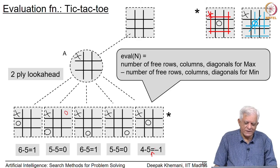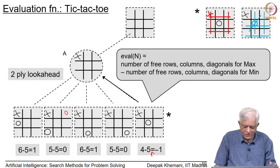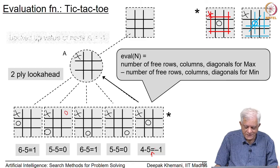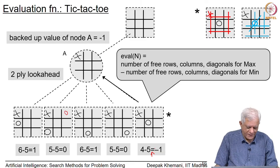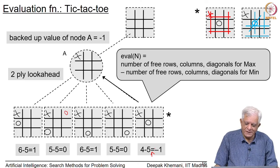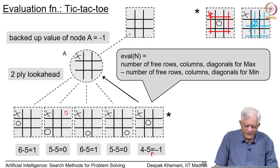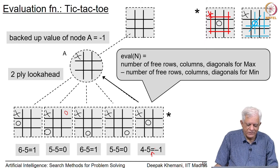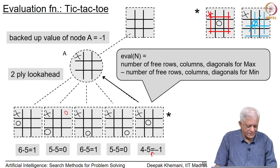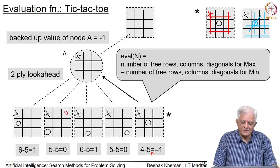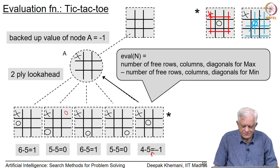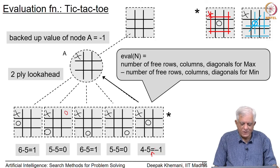We apply the evaluation function to each of the 5 board positions on the horizon. Using the minimax backup rule, since node A is a min node, min would choose the smallest of the 5 values — which are 1, 0, 1, 0, and minus 1. Therefore, the value backed up for node A is minus 1. This illustrates the evaluation function for the simple game of tic-tac-toe.